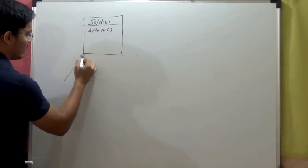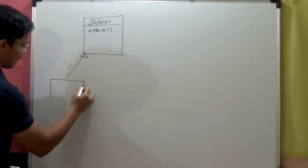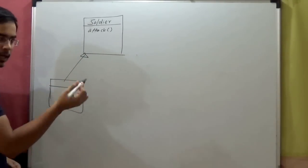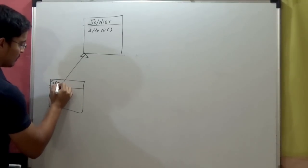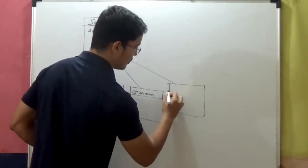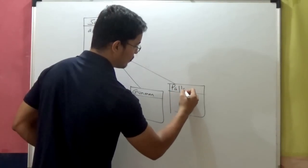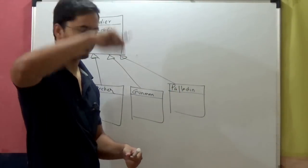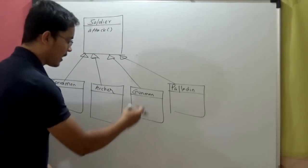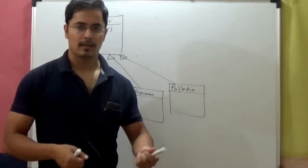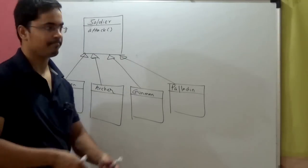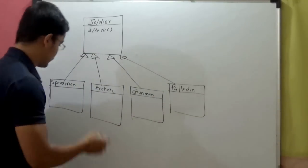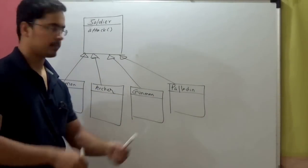This class will be inherited by specific types such as Spearman, Paladin who are warriors who fight on horseback, Gunman who have guns, Archers who use bows and arrows, and Spearman who have spears.